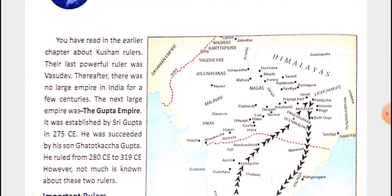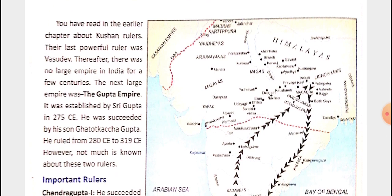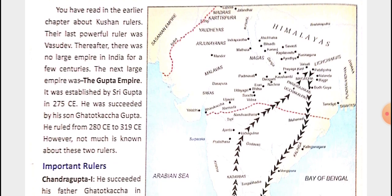About 100 years ago, India had no powerful empire. The next empire was the Gupta Empire. It was established by Shri Gupta in 275 CE. He was the king from 280 CE to 319 CE. However, not much is known about these two early rulers.